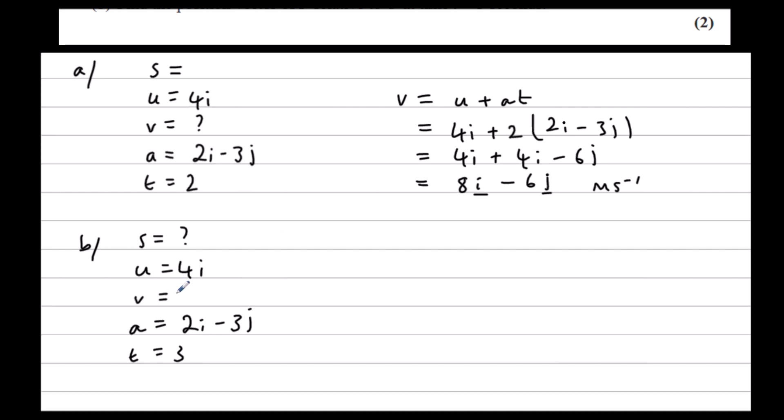So we're after the equation without V in, which is S equals UT plus half AT squared. So S is equal to UT plus half AT squared. So S is equal to 4i times 3 plus half AT squared. I'm going to write T squared first. So 3 squared times A, which is 2i minus 3j.